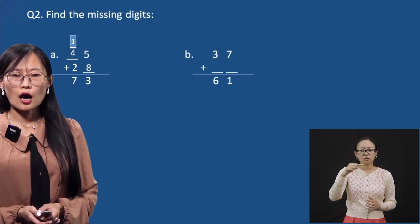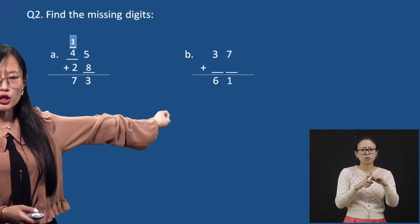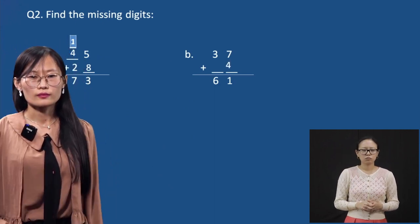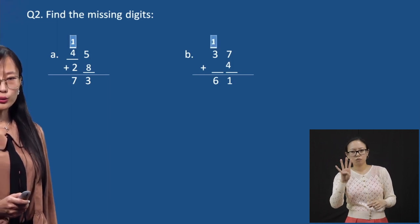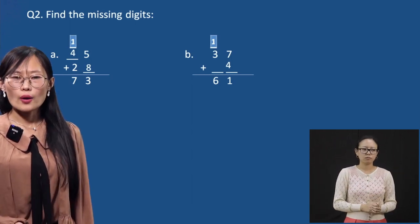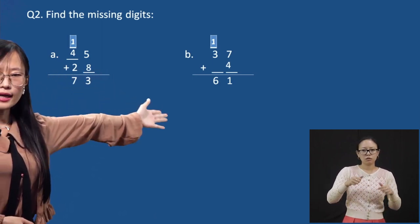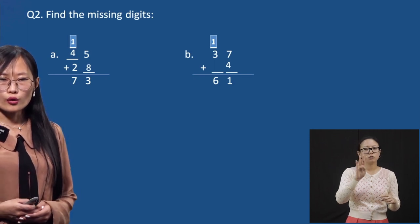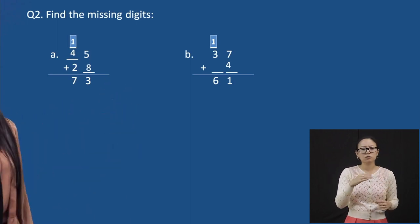For question B: 37 plus dash equals 61. The ones digit is already seven, so seven plus four is eleven — one carry over to tens. Now one plus three is four; four plus dash equals six. Four plus two is six, so the missing digit is two.